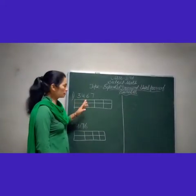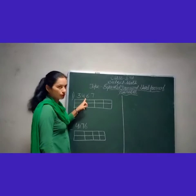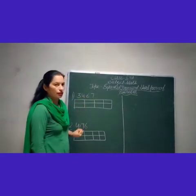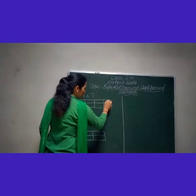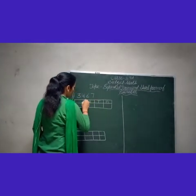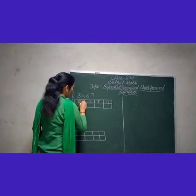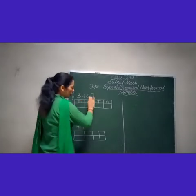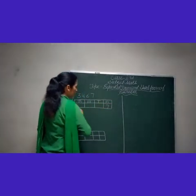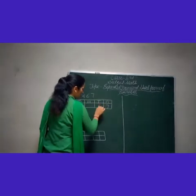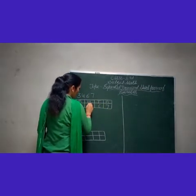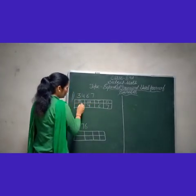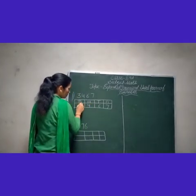Our first example is 3467. Firstly we will arrange this digit according to its place: ones, tens, hundred, thousand. We will write 7 in the ones column, 6 in the tens column, 4 in the hundred column, and 3 in the thousand column.